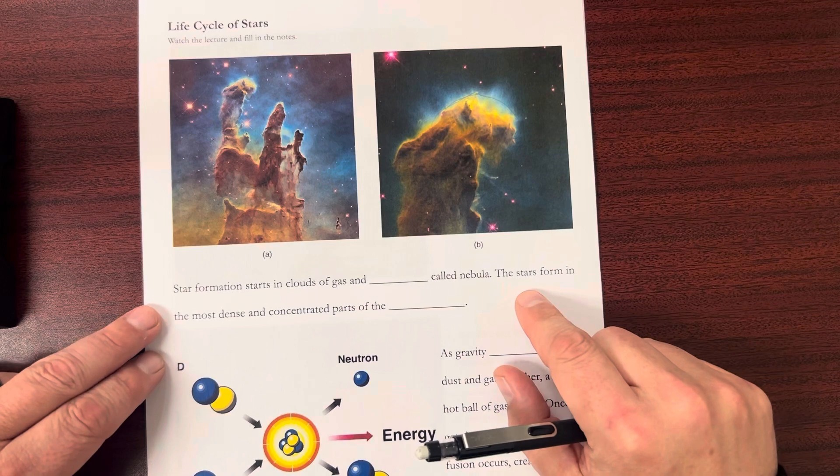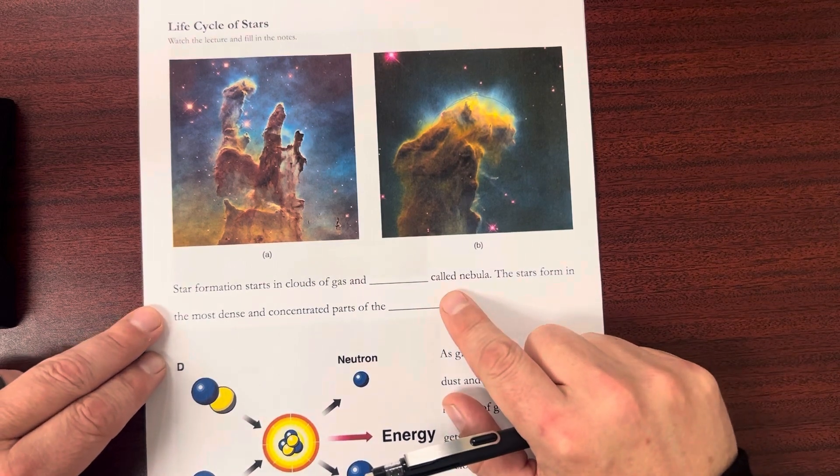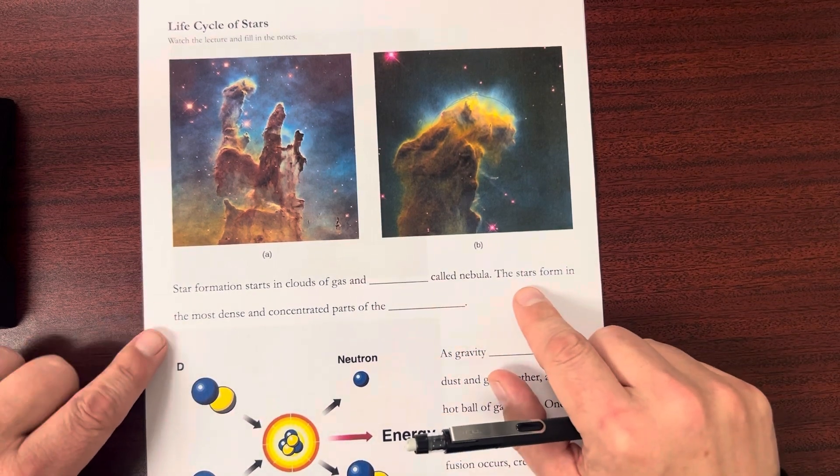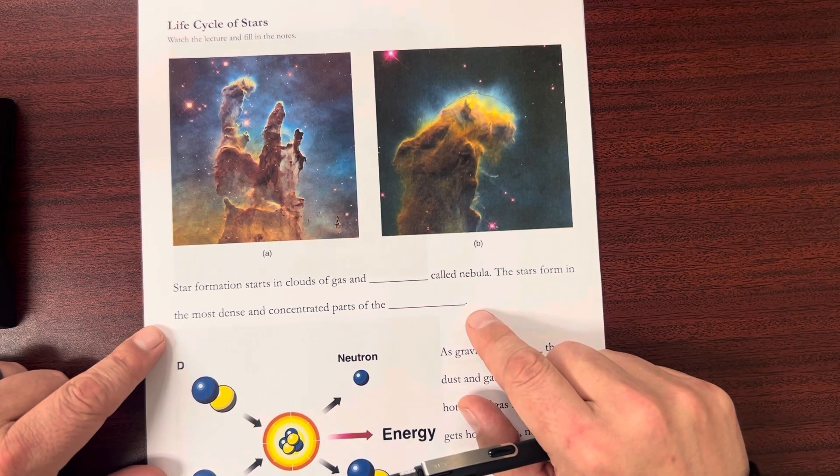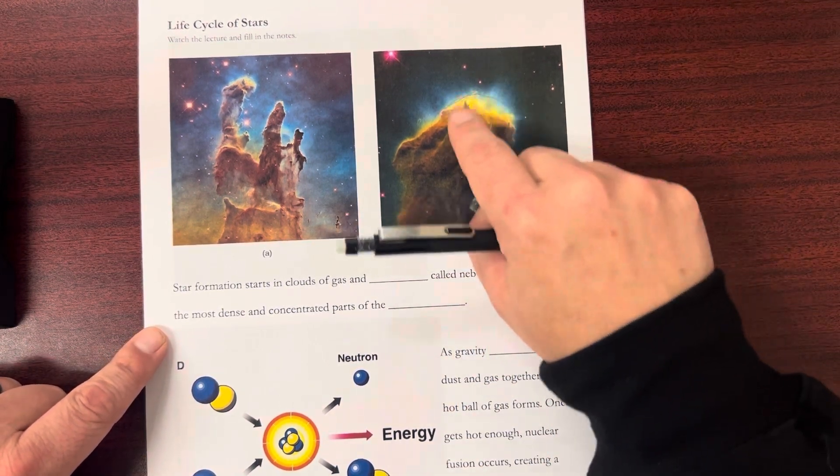So star formation starts in clouds of gas and dust called nebula. The stars form in the most dense and concentrated parts of the cloud.